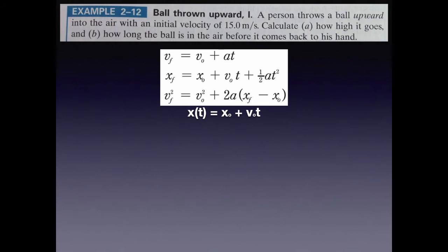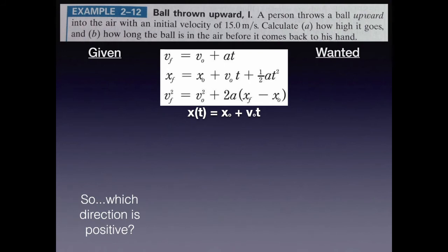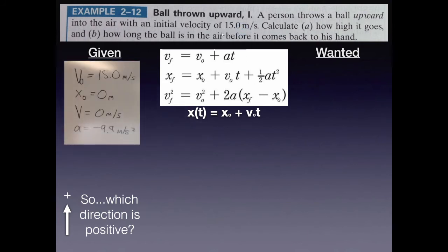Let's look at another problem. This time we're not dropping a ball from a tower — we're throwing a ball upward into the air. The initial velocity is 15 meters per second upward. We'll calculate first how high it goes, and then how long the ball is in the air before it comes back to the person's hand. We assume air resistance is ignored. Again, we need given and wanted lists, but we must first choose a positive direction. Since I'm initially throwing the ball upward, I'm going to make upward the positive direction.